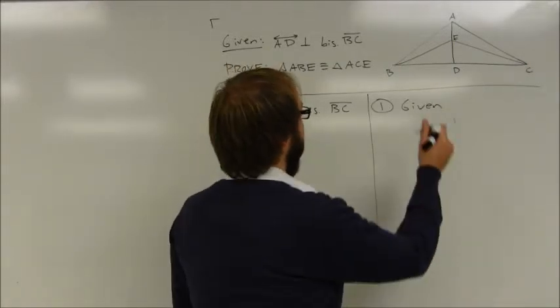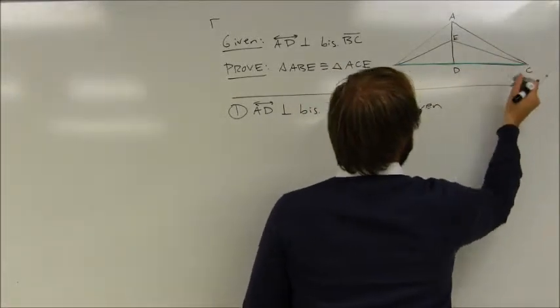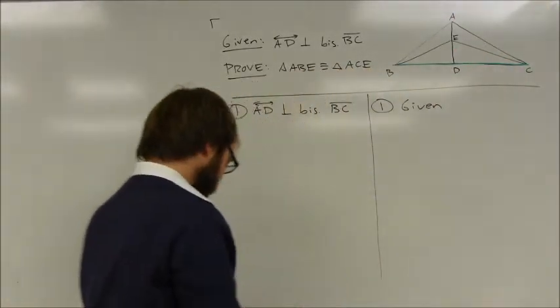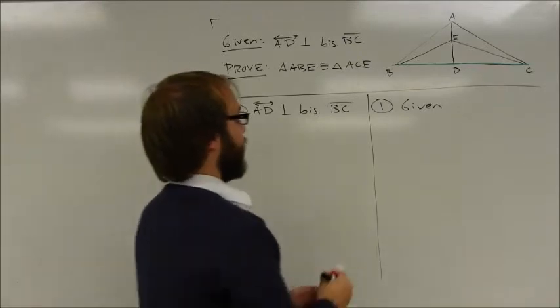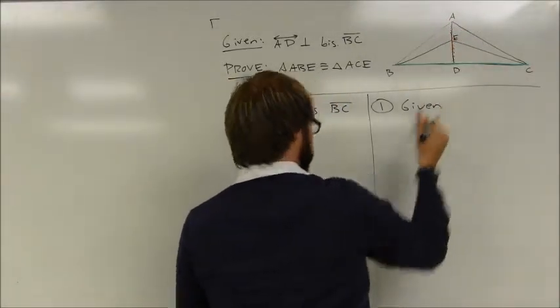The thing that I suggest you do first is highlight the segment that's being bisected, and then meanwhile you have a perpendicular bisector cutting down in the other direction, so this is bisecting, cutting down through here.